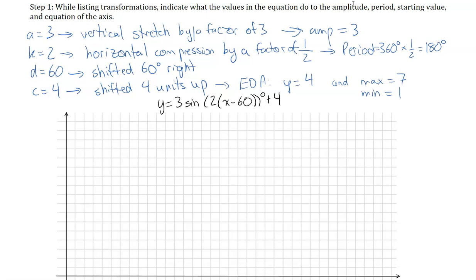The next thing is we use the k value to determine the period. Because it's a horizontal compression by a factor of 1 over k, or a half in this case, the period is 360 times that factor of a half, or 180 degrees.